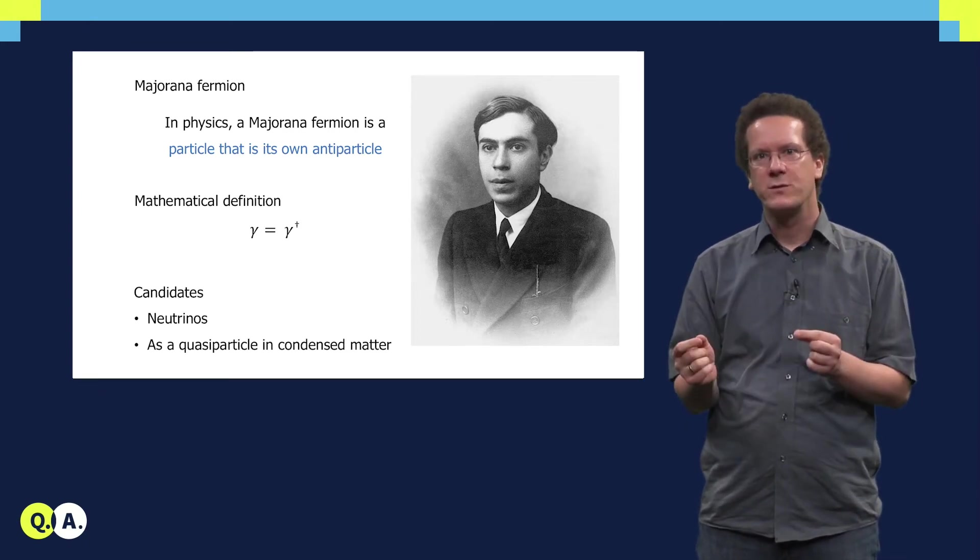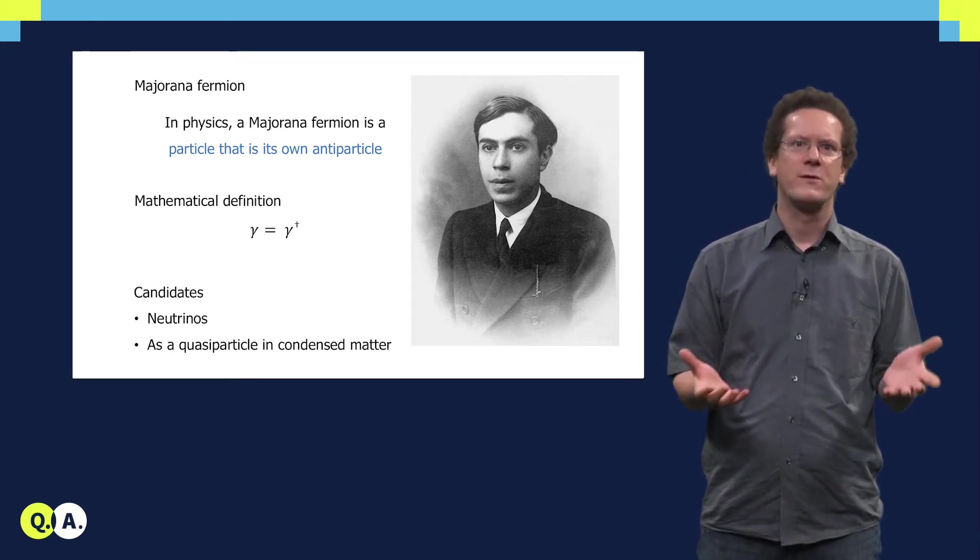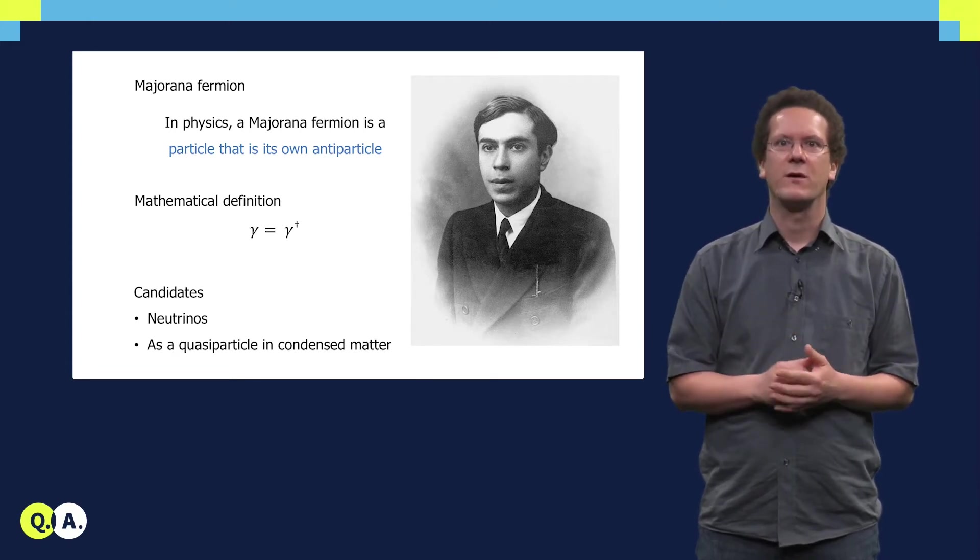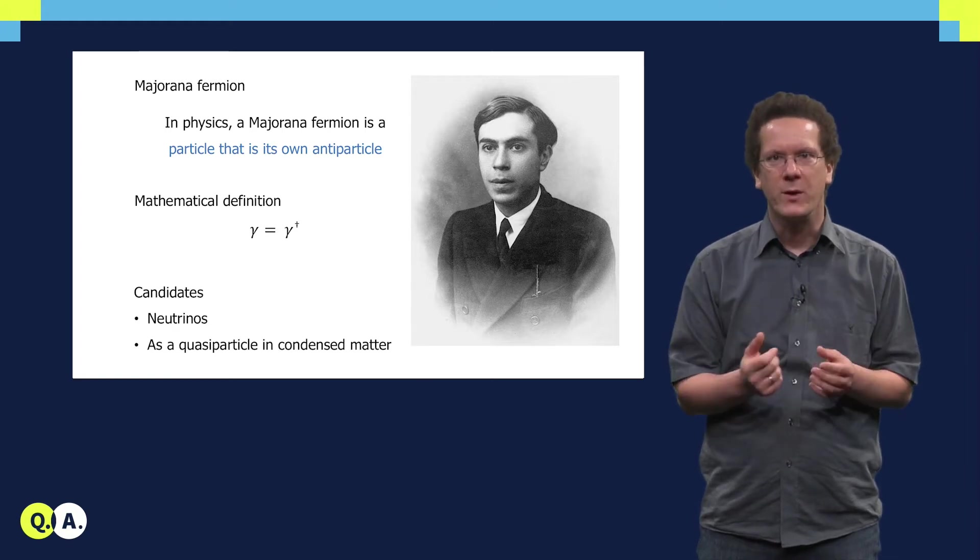there is an electron and a positron, a proton and an antiproton, and so forth. These are examples of what we call Dirac fermions. However, there is also a separate kind of fermion in high energy physics, which is called a Majorana fermion.